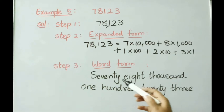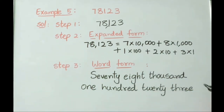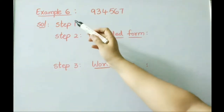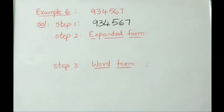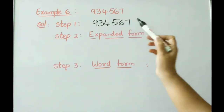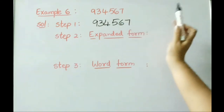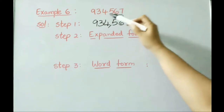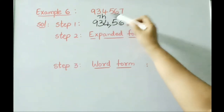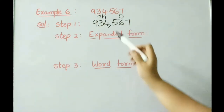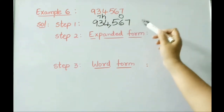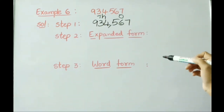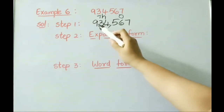Now let us read the word form: 78,123. Next, let us see Example 6: the number is 9,34,567. Separate the number using commas from right to left in groups of three. This is the ones period and this is the thousands period, so the number is 934,567.